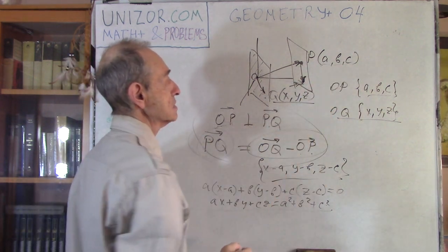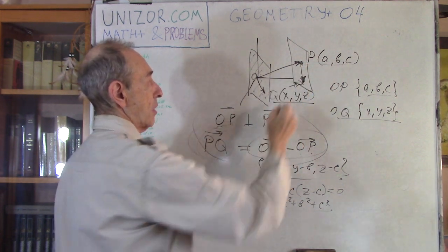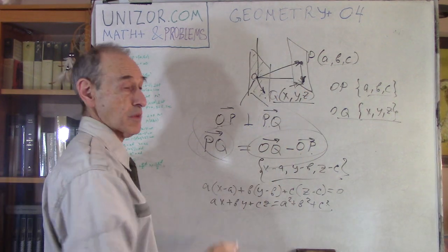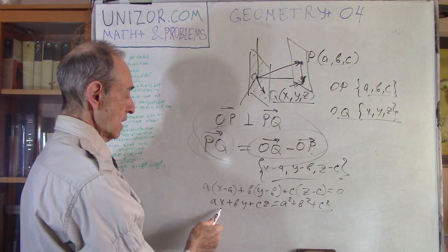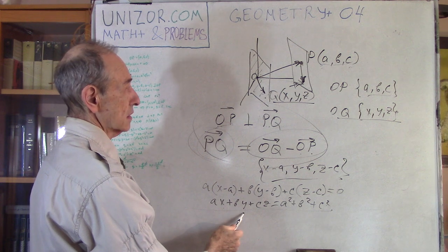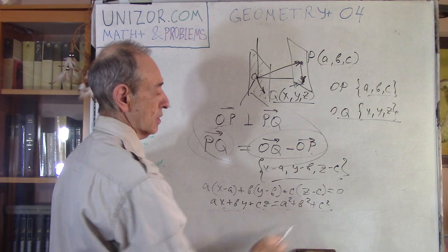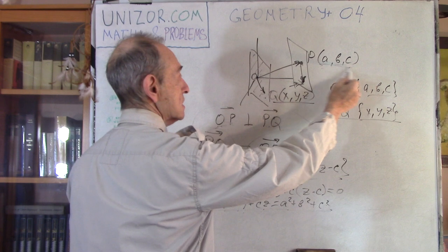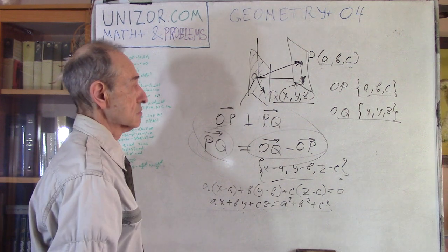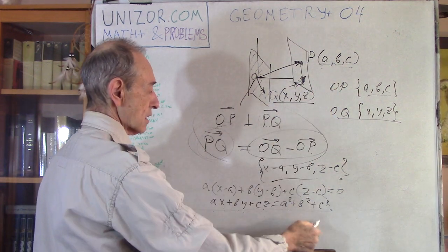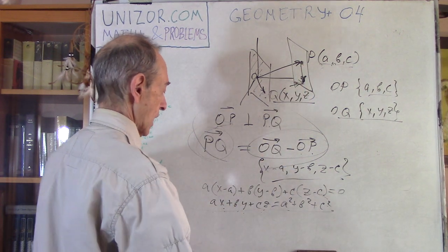Point (A, B, C) is supposed to belong to this plane, meaning it should satisfy the equation. If we substitute X equals A, Y equals B, Z equals C, we get A² plus B² plus C² equals A² plus B² plus C², which checks out. So if you have vector (A, B, C), then Ax plus By plus Cz equals A² plus B² plus C² is the equation of the plane through its far end and perpendicular to it.